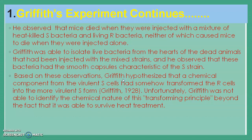Griffith's conclusion was that although he injected a mixture of heat-killed S bacteria and living R bacteria, when he isolated bacteria from the hearts of the animals, he found S bacteria present. He concluded that a chemical component from the heat-killed S bacteria transformed the R-type bacteria into live smooth bacteria. At that time, Griffith could not identify the chemical nature of this transforming principle. Later, in 1944, Avery, MacLeod, and McCarty discovered that this transforming principle is nothing but DNA.